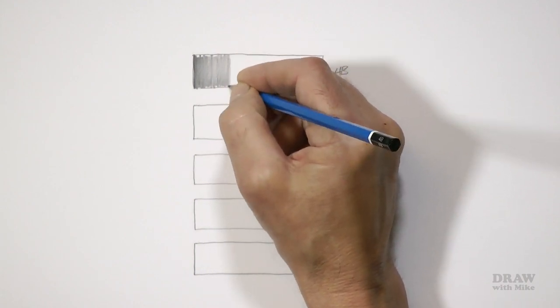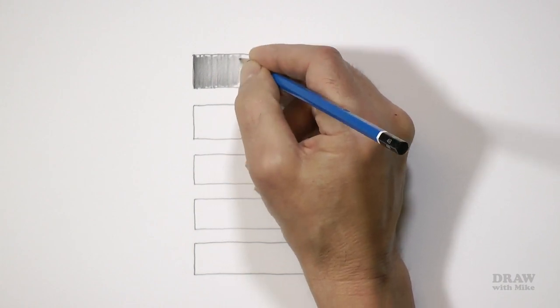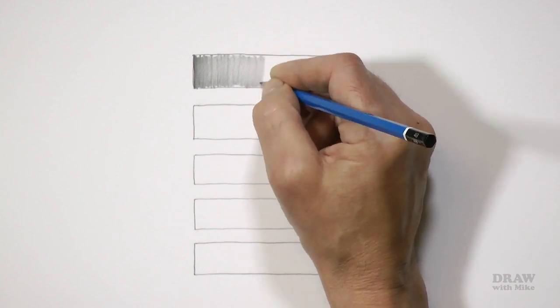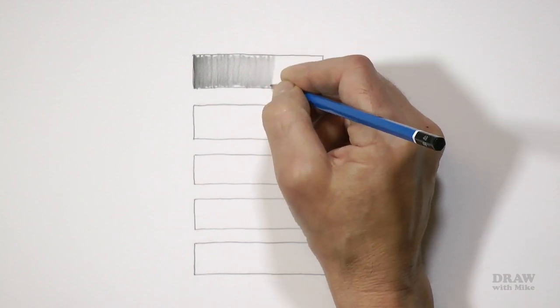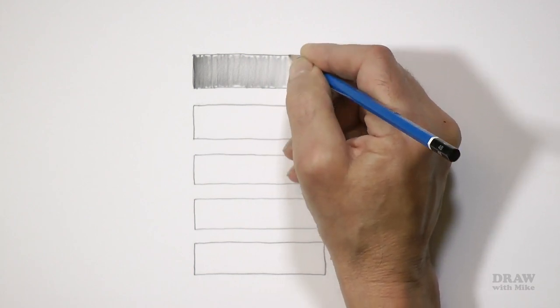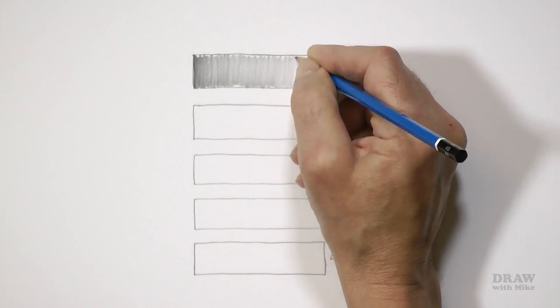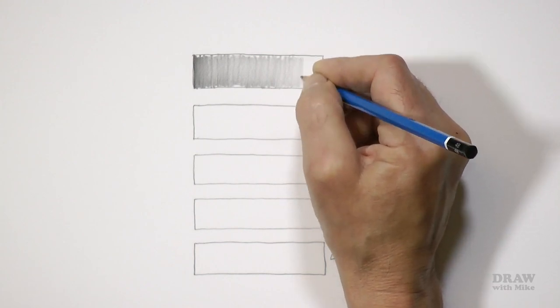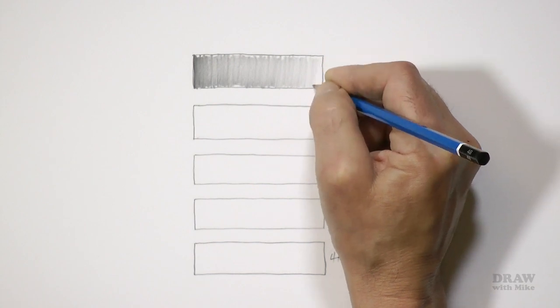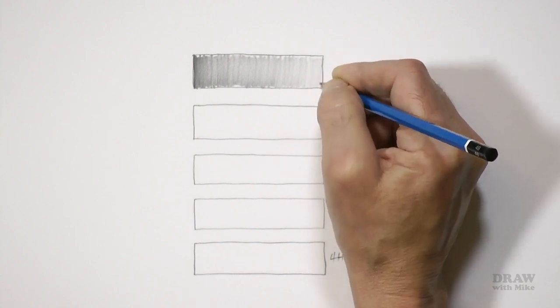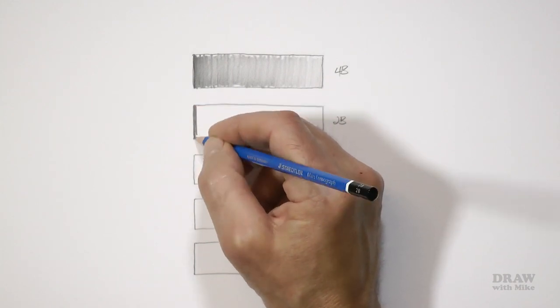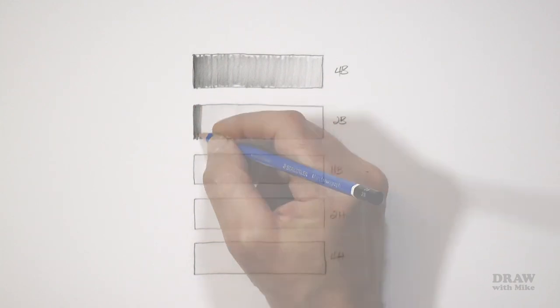As you shade across, just reduce the weight. You have the white of the paper to refer to all the time. So aim to be halfway between black and white near the middle. And as you gradually reduce the weight, towards the end you should be just grazing the surface. And use a flat face so your lines merge together. That's especially true of using the H's, the hard grades.